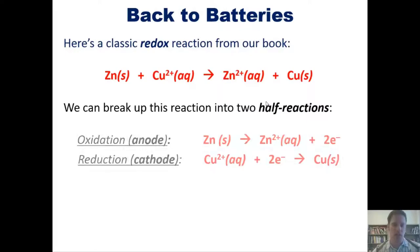We can actually separate this reaction into two half-reactions as shown here. At the oxidation or anode site, the zinc is getting oxidized to become Zn2+, spinning out two electrons. Those two electrons in turn get received by the Cu2+ to reduce it from Cu2+ to copper zero. This is this classic redox reaction.